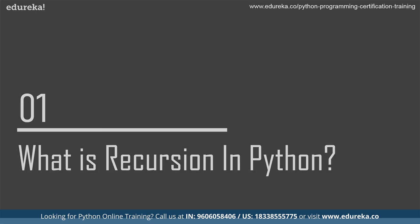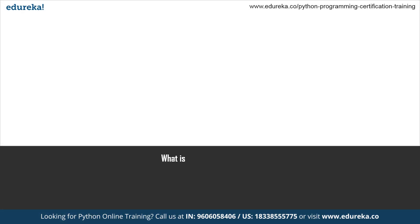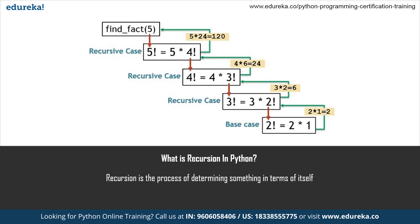Now without any further ado, let's understand recursion in Python. Recursion is the process of determining something in terms of itself. In Python, any function can call any other function, and we can use a function to call itself as well. These types of functions, which call themselves until a certain condition is met, are termed recursive functions.